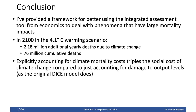In conclusion, I've provided a framework for better using the integrated assessment tool from economics to deal with phenomena that have large mortality impacts. Under a 4.1-degree Celsius warming scenario by 2100, I project 2.18 million additional yearly deaths due to climate change and 76 million cumulative deaths. Explicitly accounting for these mortality effects triples the social cost of climate change compared to just accounting for damages to output levels.